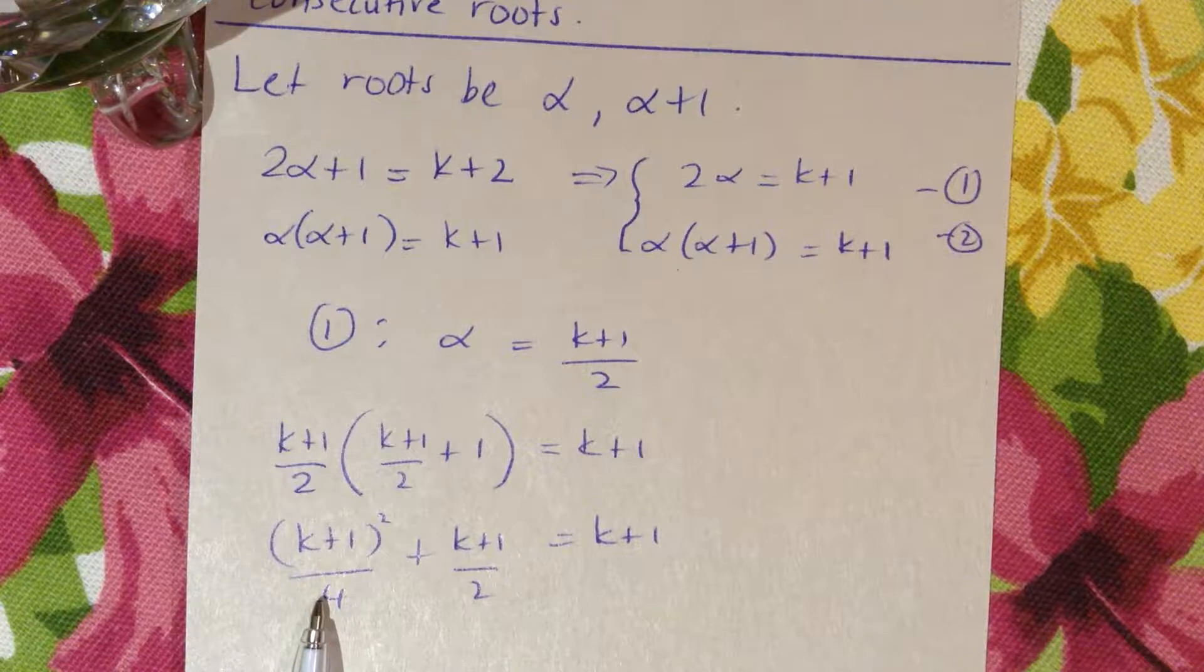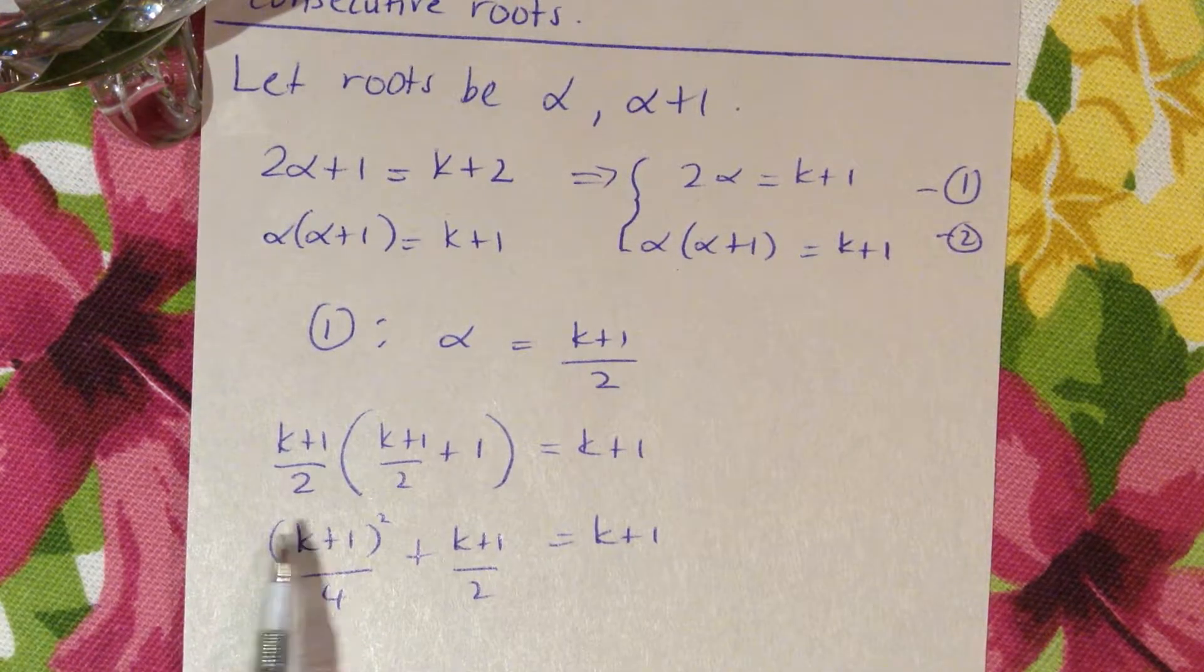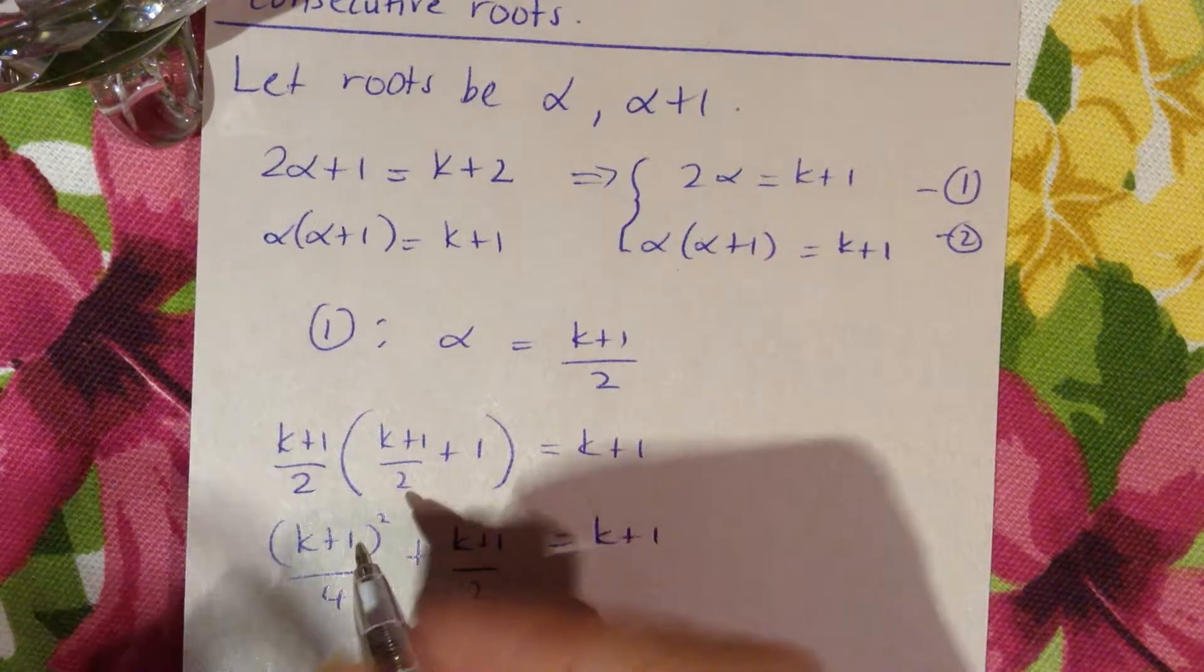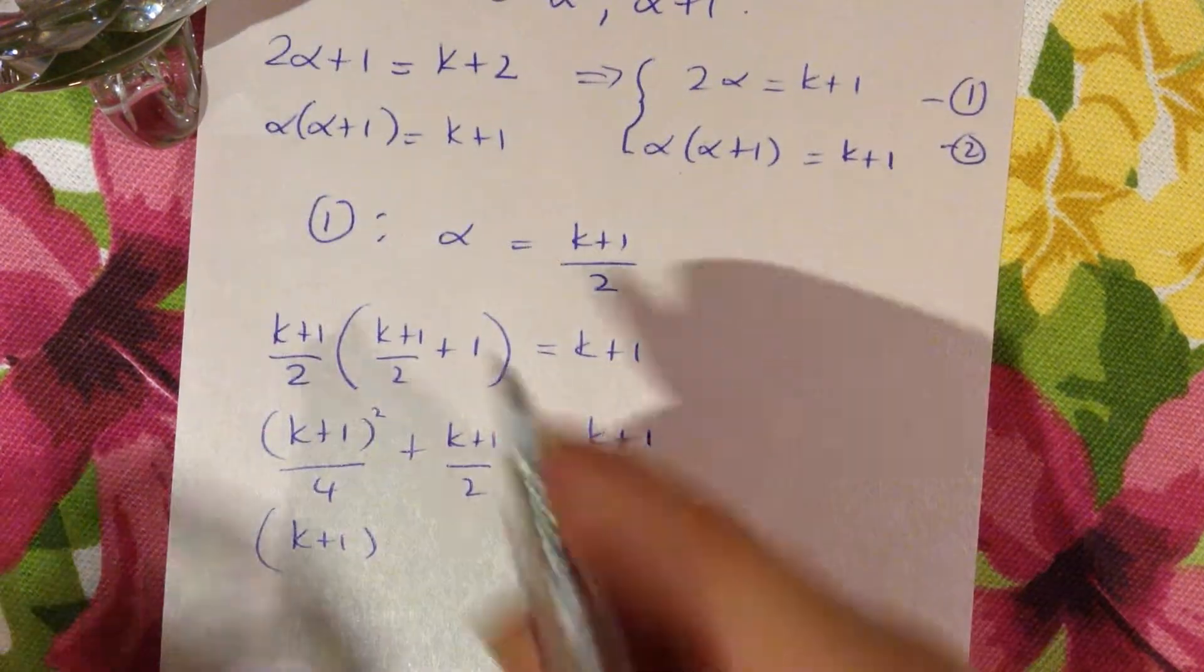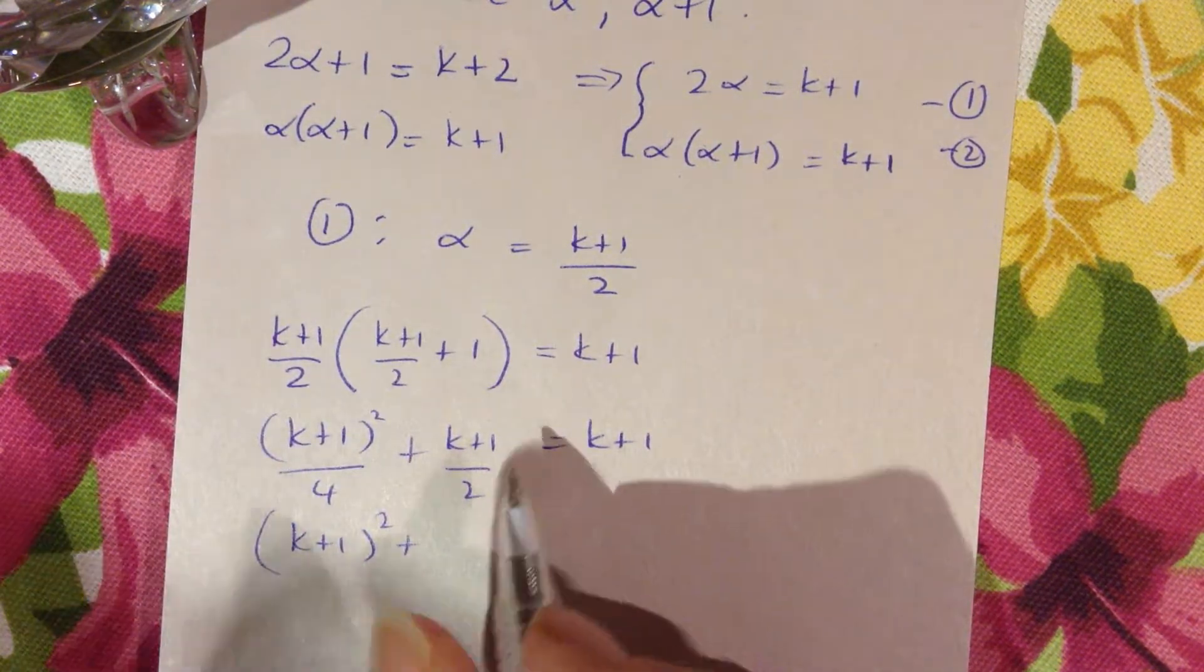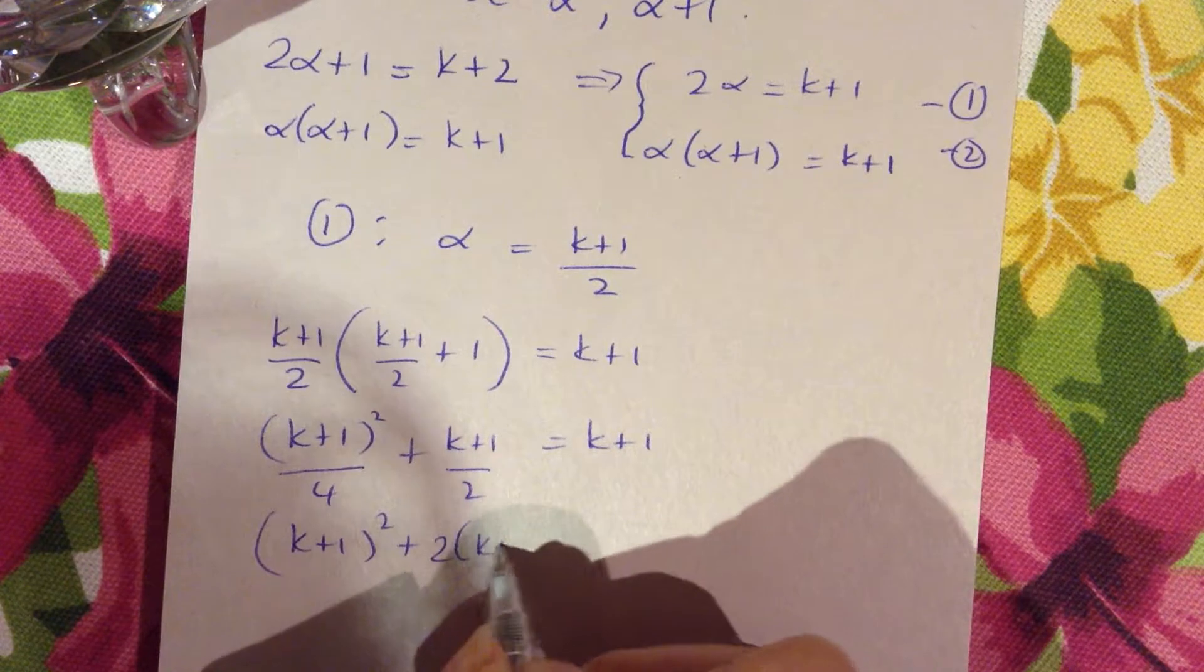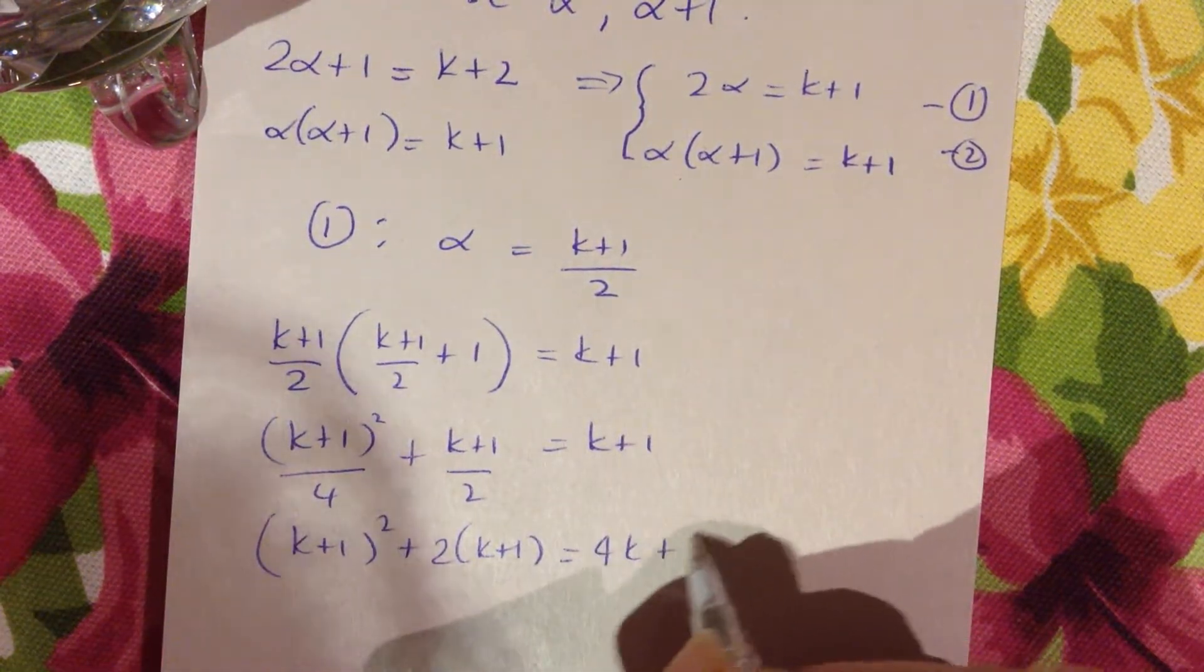Now we have a common denominator of 4, so we're going to multiply everything by 4. Upon doing that, the 4 will cancel here, so we've got (k+1)² + 2(k+1) = 4k+4.